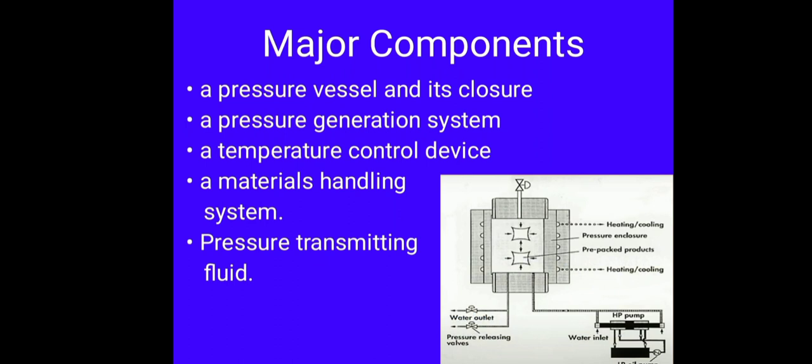Now, let us talk about the major components of HPP. First is pressure vessel and its closure where we keep our food. Second is a pressure generation system. As we can see in the picture, there is HP pump for intensifying the pressure which we are applying. Then the third one is a temperature control device which is usually a jacket, because on increasing every 100 bar pressure, there is also an increase in 3 degree temperature which we need to maintain. Then there is a material handling system which is usually a basket where the food is kept. Then last is the pressure transmitting fluid which is generally water. However, we can use other fluids such as silicon oil, propylene glycol, etc. as well.